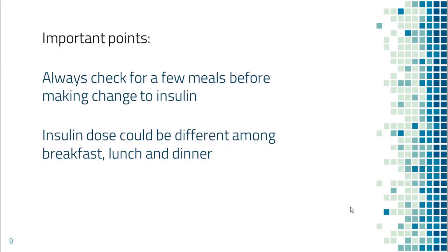Some important points for your safety. First, always check for a few meals before making a change to insulin dose — do not change insulin dose based on just one blood sugar reading. Second, insulin dose could be different among breakfast, lunch, and dinner. It depends on how much carb you eat and many other factors.